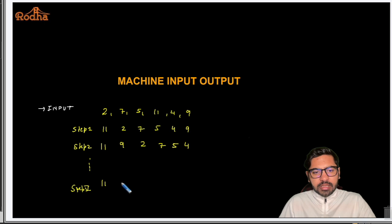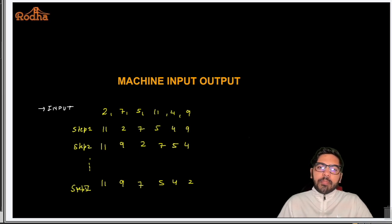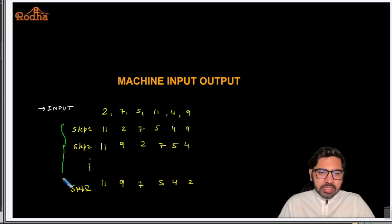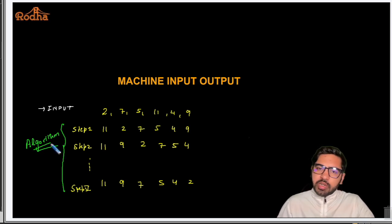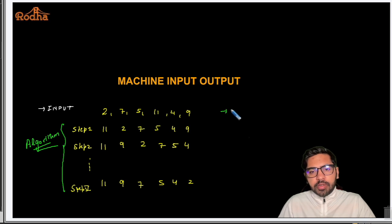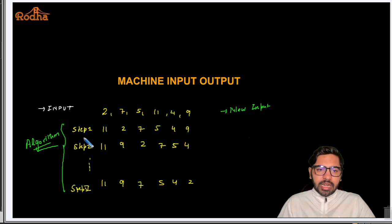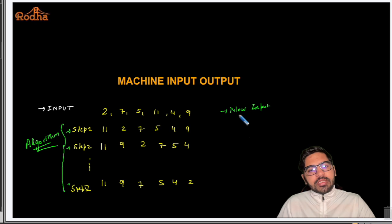Let's say step five is the final step, and the final step looks like: eleven, nine, seven, five, four, and two. You are supposed to figure out what this machine is doing. The machine is running a certain algorithm step-by-step. Once you figure out that algorithm, based on the same algorithm, you will have to apply it to a new input that would be provided to you.